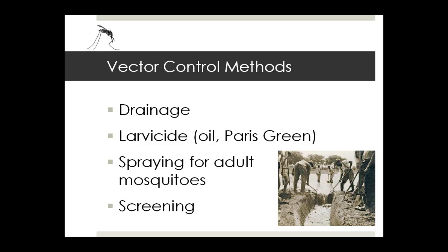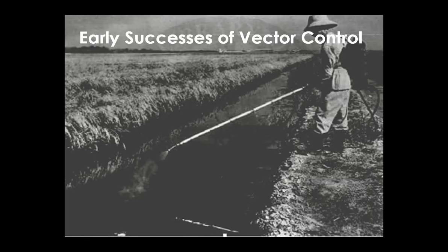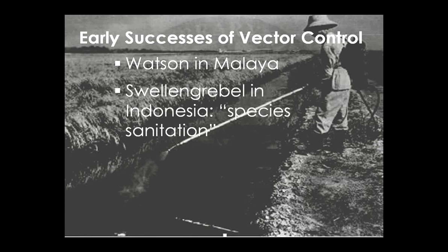To do this, a number of technologies were developed — black oil and Paris Green, spraying for adult mosquitoes, fumigating with pyrethroids, later DDT, and screening of houses. There are a number of early successes. Malcolm Watson was successful in draining large areas around rubber plantations. His methods were adopted by Swan Grebel in Indonesia, who refined them by identifying the specific species causing transmission and eliminating its breeding sites.